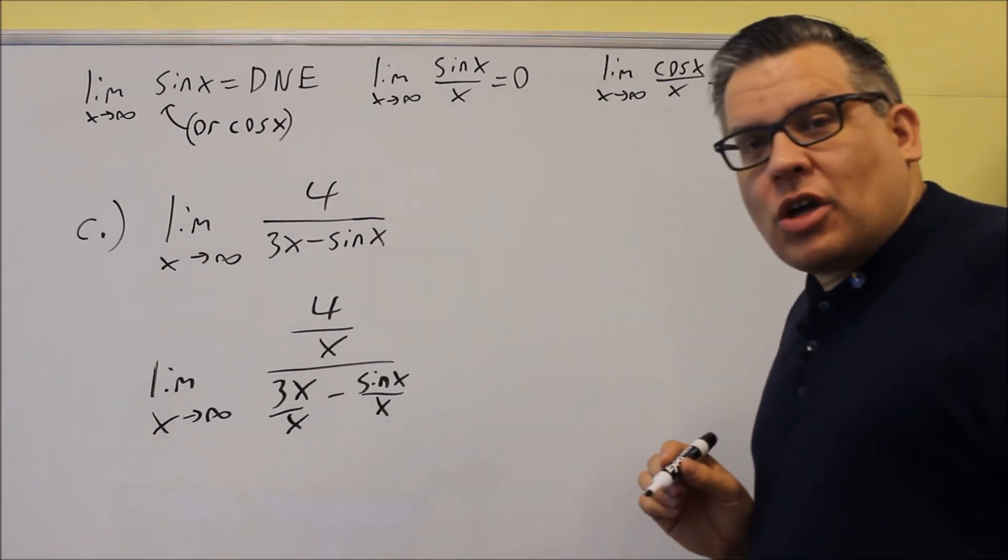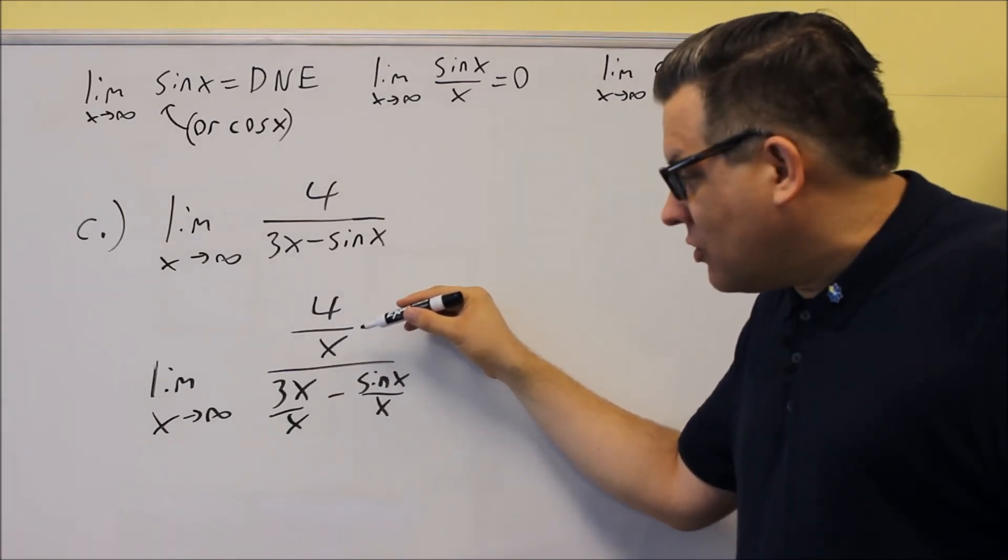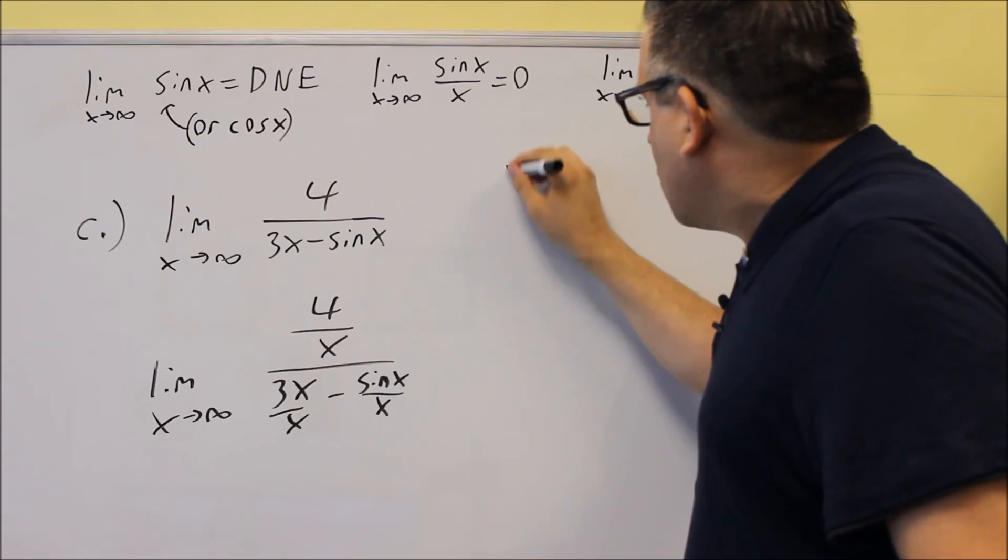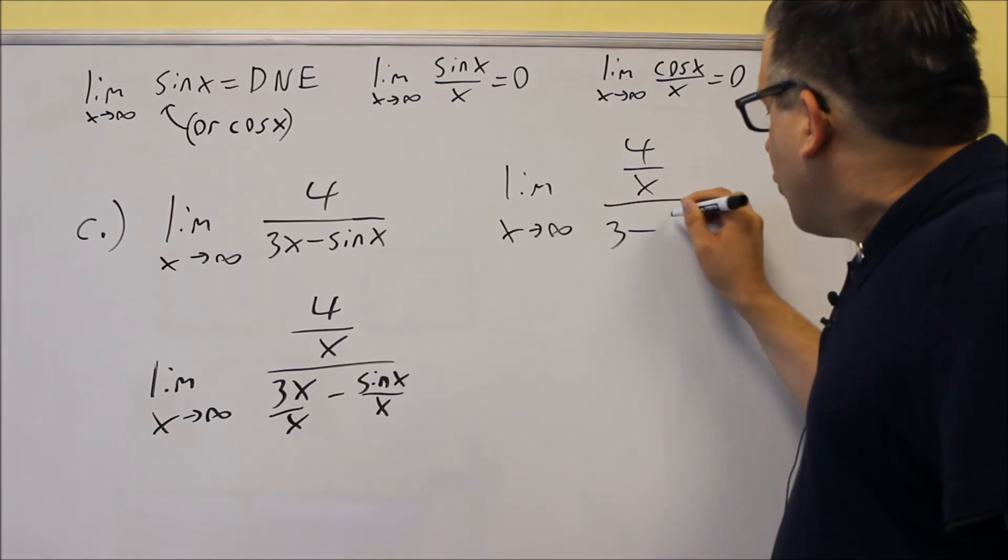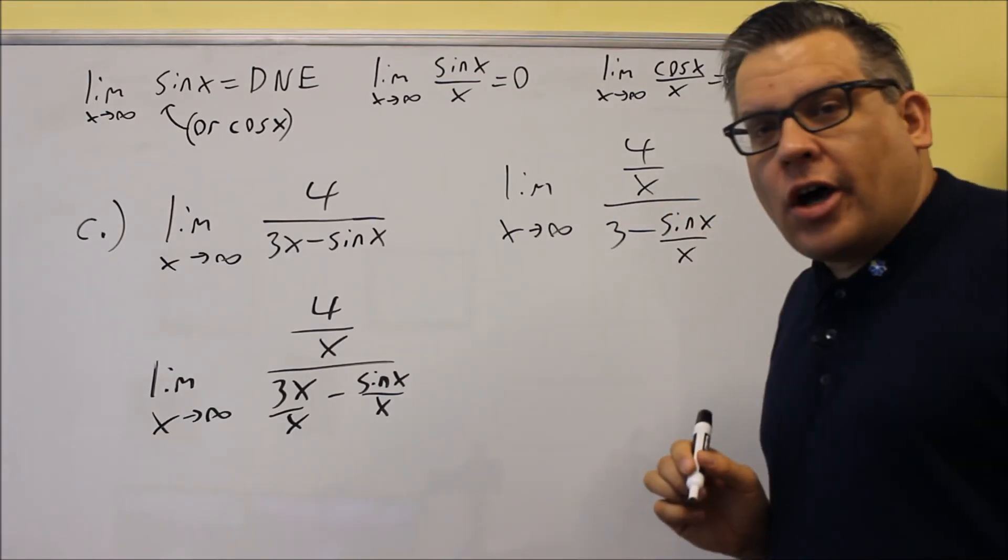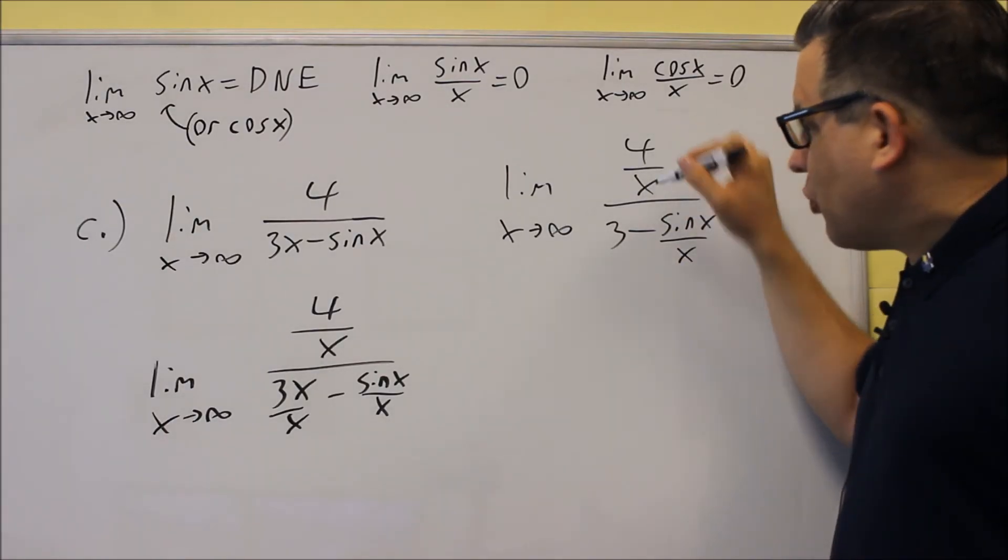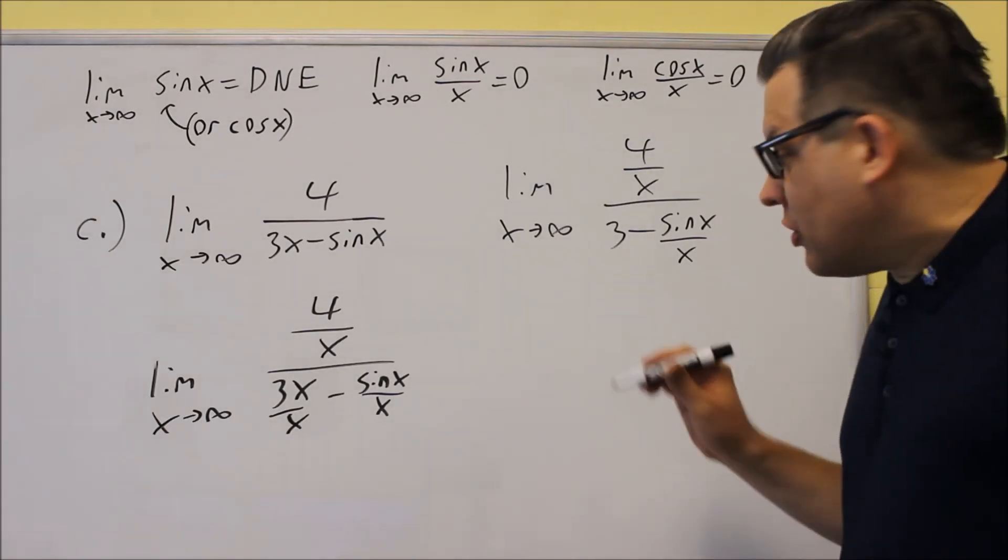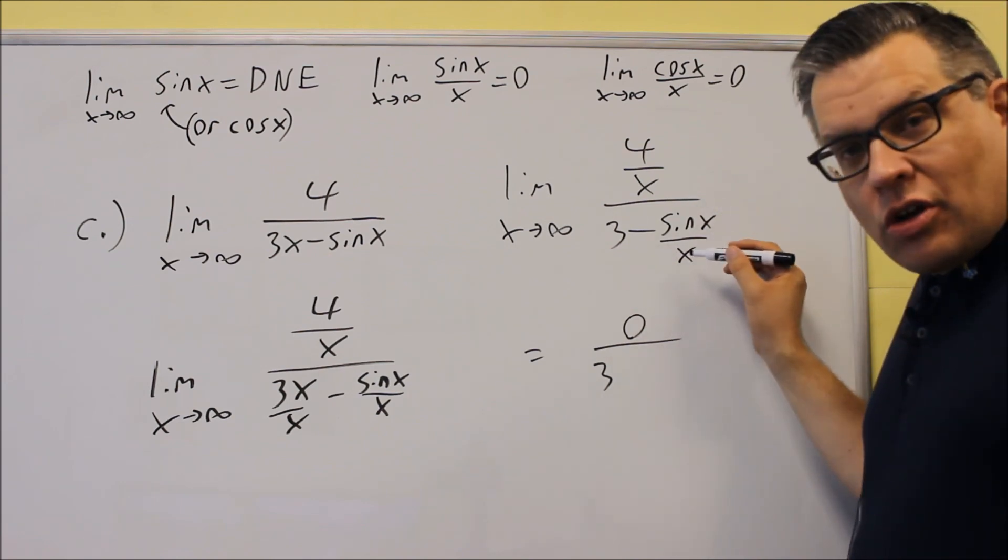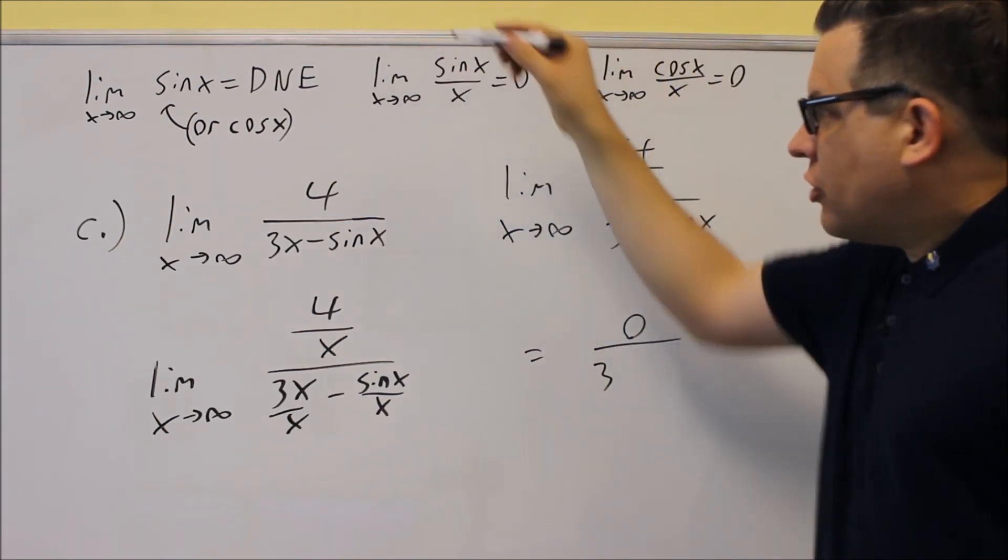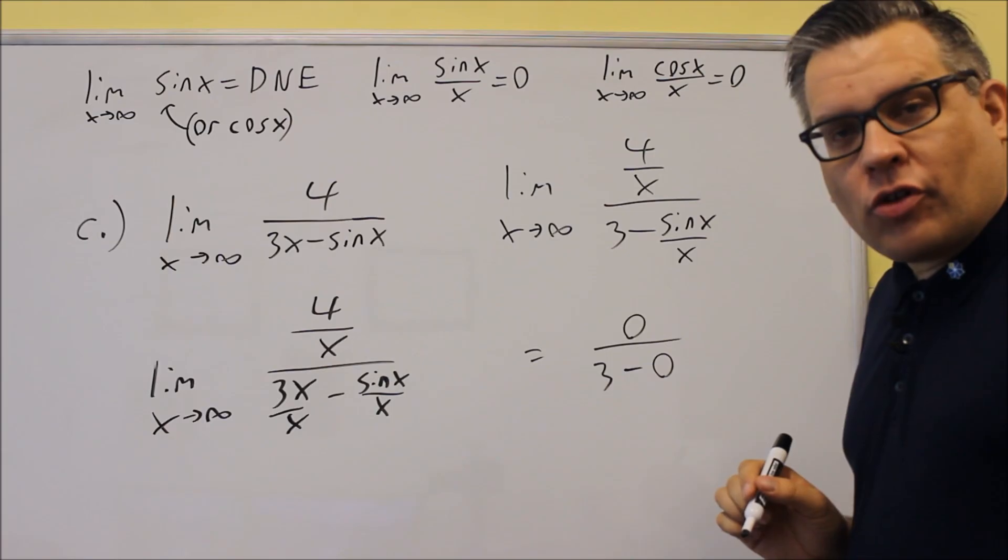We do that because then we can make use of the property that we've mentioned before, where if you have a constant over x to the n, that part's going to go to 0. Now we do want to simplify this first before we do that. So we get 4 over x on top, and the bottom 3 minus sine x over x. Now, the top part, when we apply our limits to top and bottom separately, this one is going to go to 0 because of that property we talked about before. On the bottom we have 3. This one is also going to go to 0 because that's this special limit, limit as x approaches infinity of sine x over x. That goes to 0. So we get 0 over 3 minus 0. Final answer is going to be 0.